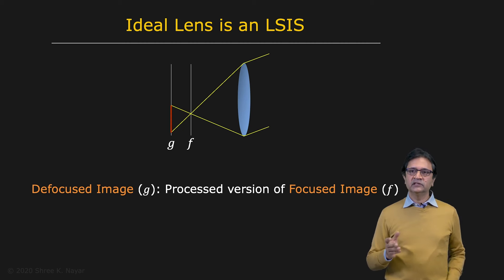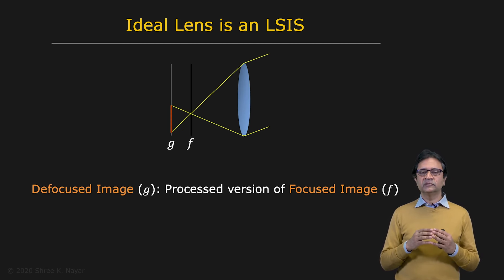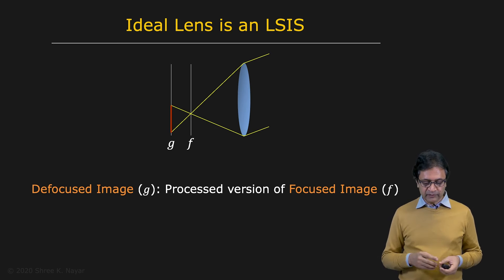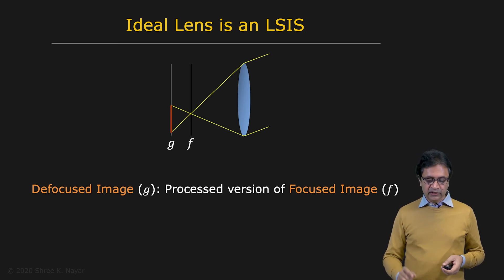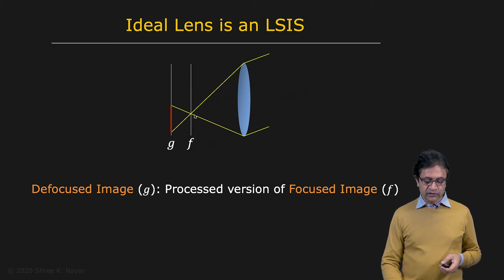So now let's take a look at why linear shift invariant systems are relevant to us in computer vision and imaging. So here is an ideal lens system. Here's a lens. It forms a focused image on this plane, and that image we'll call f. So the scene is out here, and you have a focused image right here, f.